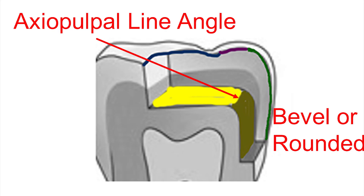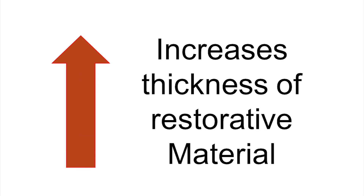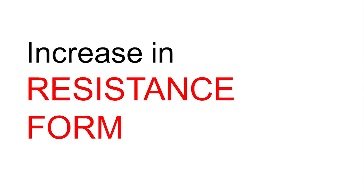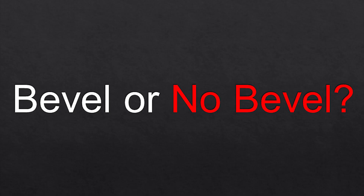An important exam question is: how should the configuration of the axio-pulpal line angle be — the junction where the axial wall and pulpal floor meet? This area should always be beveled or rounded for two reasons. First, it reduces the amount of stress at this fulcrum area. Second, making it round or beveled increases the thickness of restorative material at this junction, making the restoration stronger.